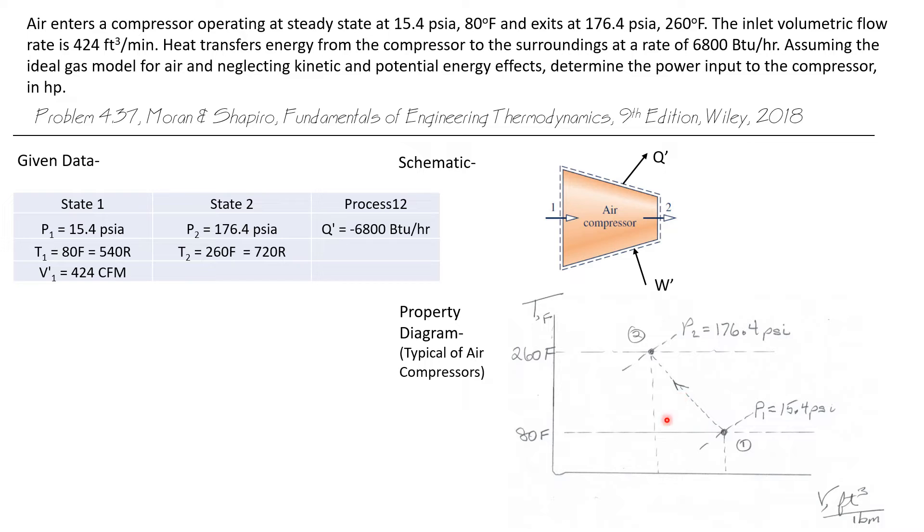Let's draw a TV diagram of this air, and this would be typical of air compressors. We're at state 1 at some low pressure and some low temperature, and we go through this compression process. So obviously, the specific volume at state 2 is less than it is at state 1. And we're going to go to this higher pressure and higher temperature. This would be very typical of any kind of gas compressor.